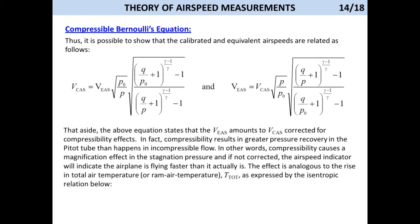That aside, the above equation states that the equivalent airspeed equals the calibrated airspeed corrected for compressibility effects. In fact, compressibility results in greater pressure recovery in the pitot tube than happens in incompressible flow. In other words, compressibility causes a magnification effect in the stagnation pressure. And if not corrected, the airspeed indicator will indicate the airplane is flying faster than it actually is. The effect is analogous to the rise in total air temperature or RAM air temperature as expressed by the isentropic relation below.